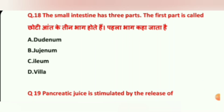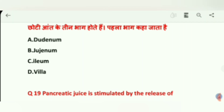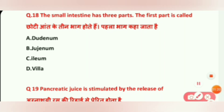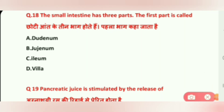Question 18: The small intestine has three parts. What is the first part called? Options are: Duodenum, Ileum, and Villus. The correct answer is A, Duodenum.